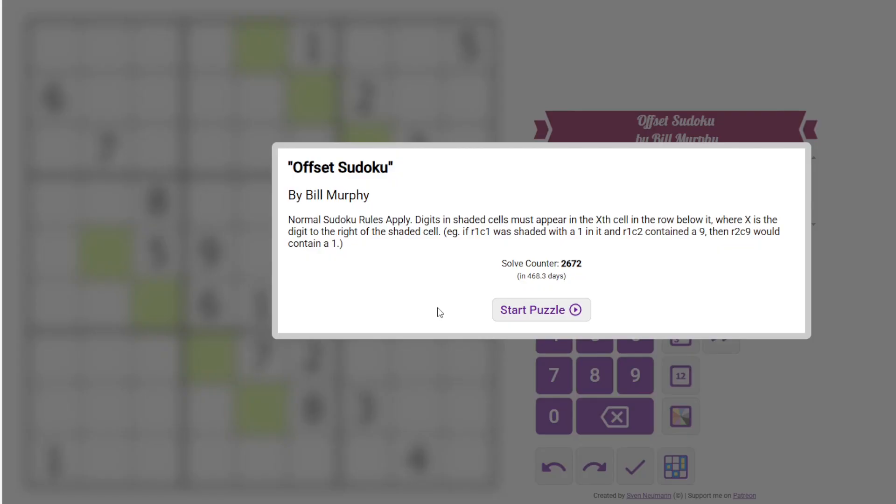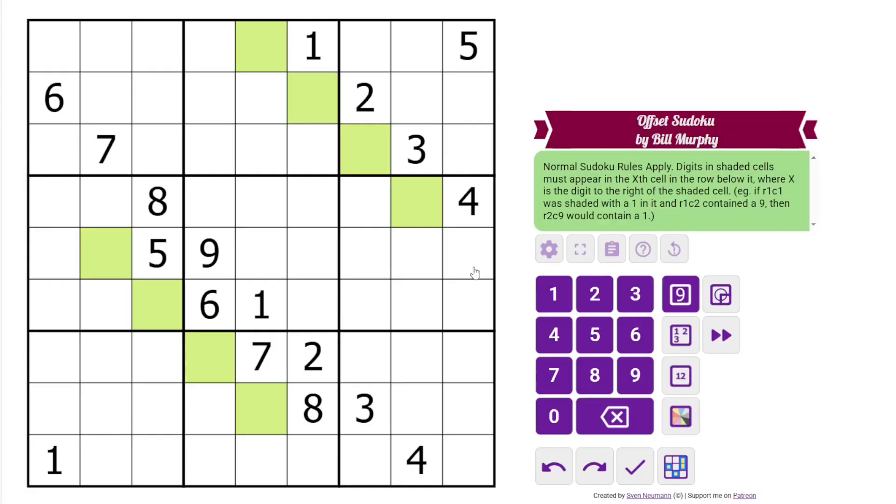Today I'm solving Offset Sudoku by Bill Murphy. This has some shaded cells in the grid. So in addition to normal Sudoku rules on the 9H row, column, and 3x3 box, we have some shaded cells and digits in the shaded cell must appear in the Xth cell in the row below it, where X is the digit to the right of the shaded cell.